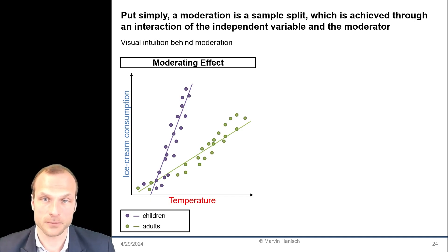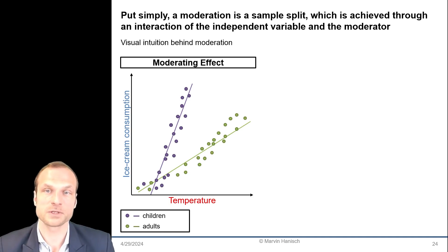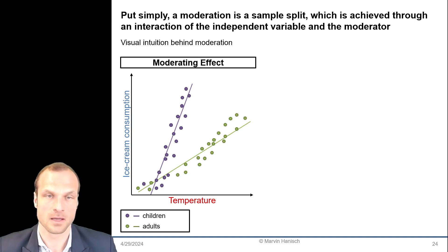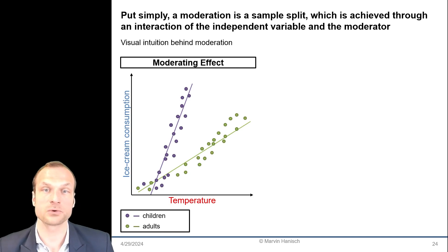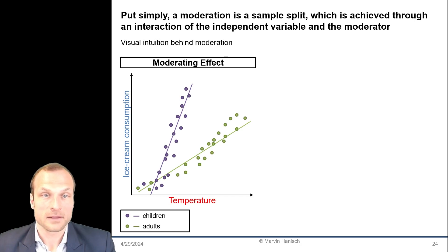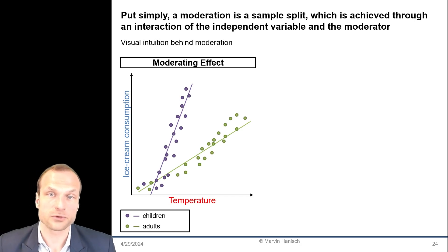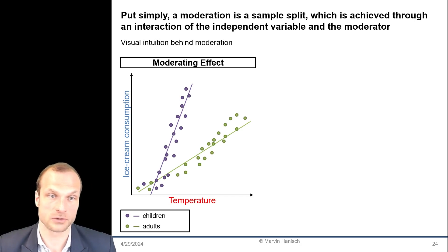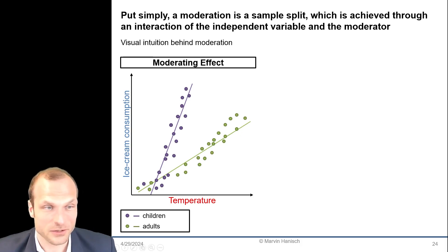A smarter option is using an interaction term where you multiply the independent variable and the moderator. In our case, this means we add an interaction term between temperature and age in our regression model. This lets us see if the effect of temperature on ice cream consumption differs depending on the age of our customers. But here's the catch.